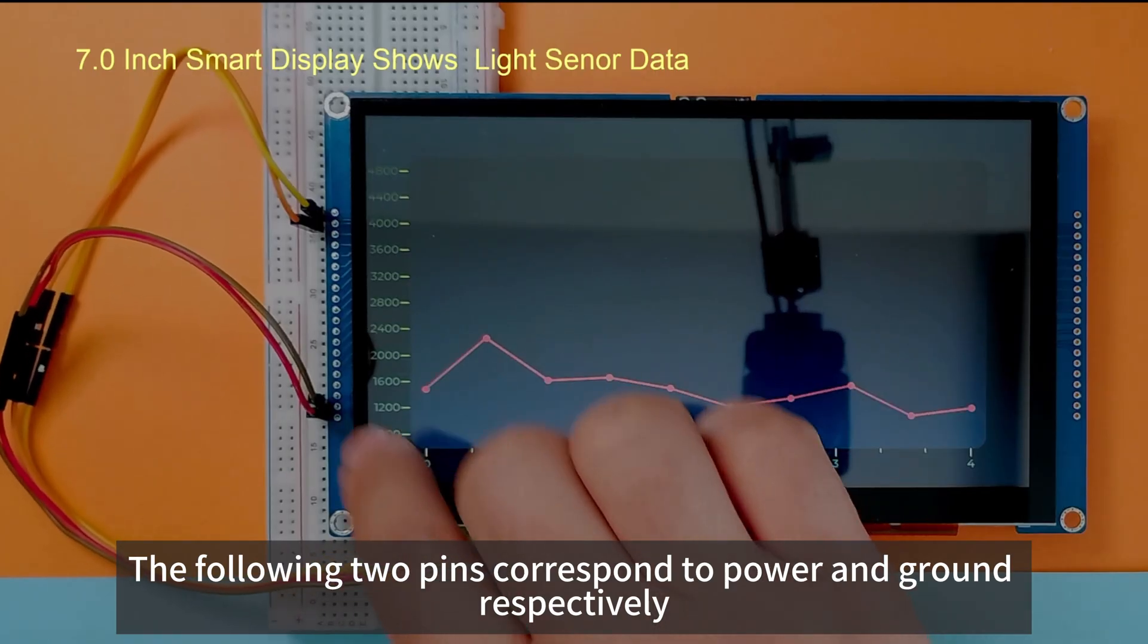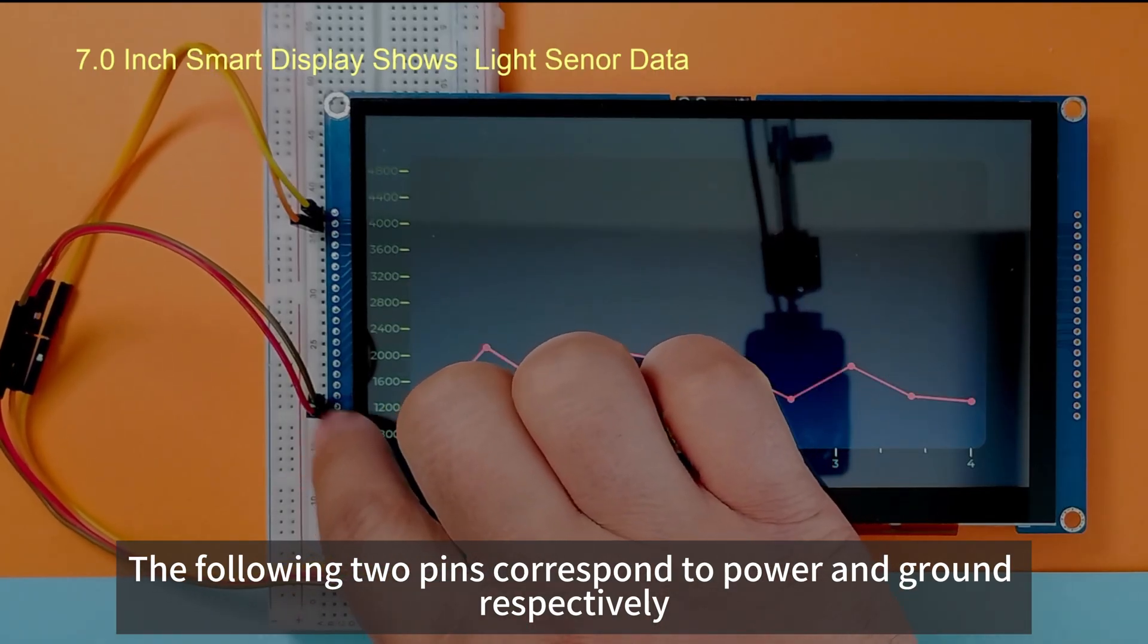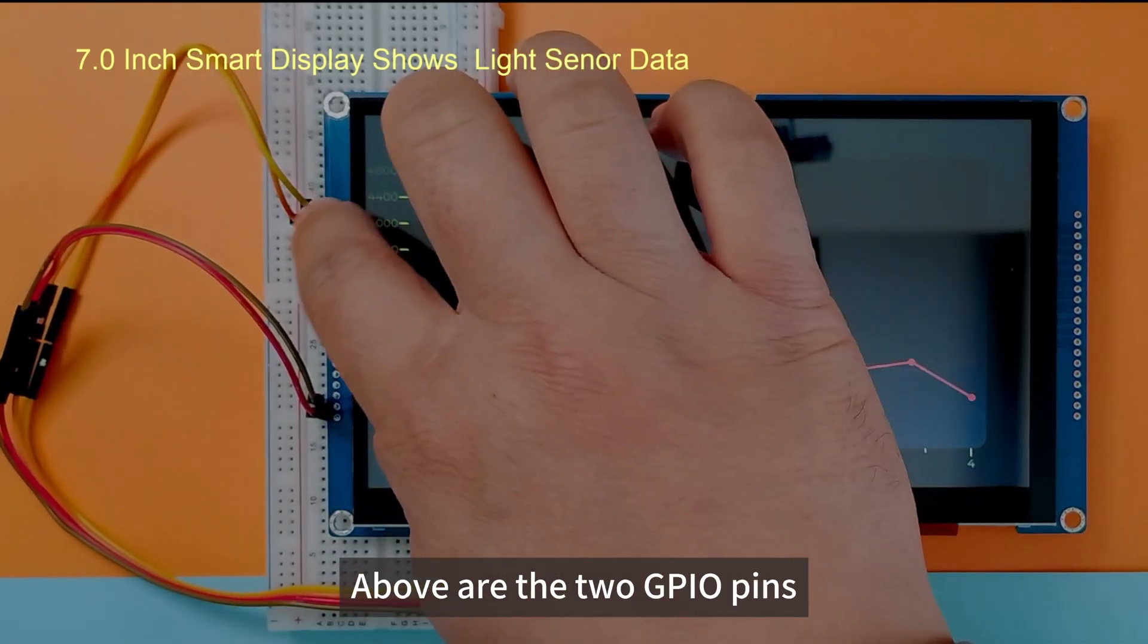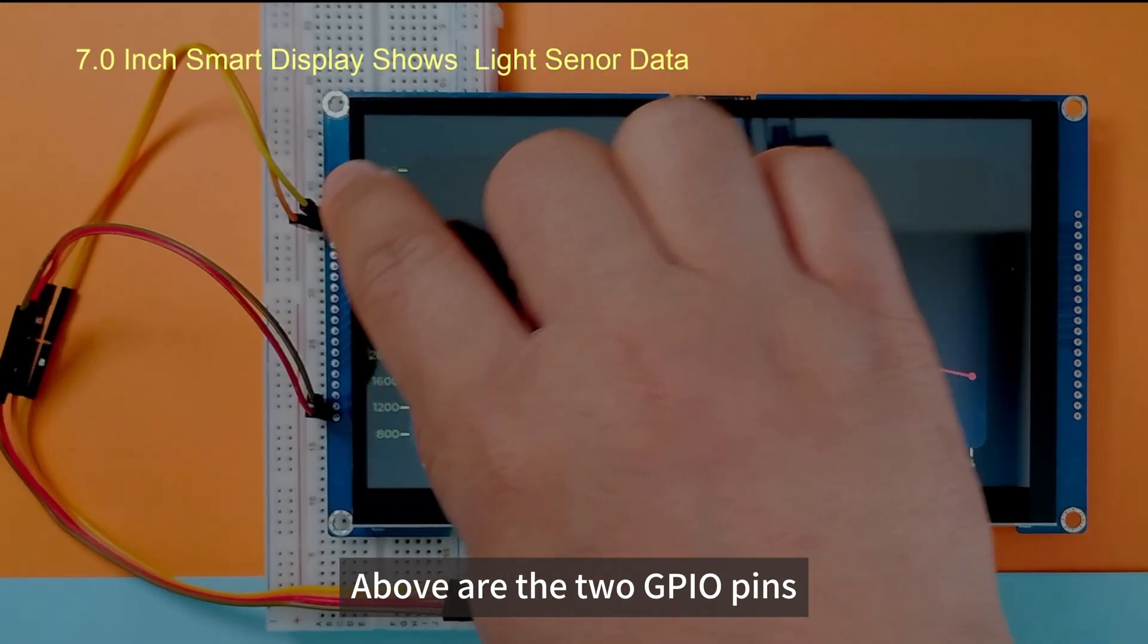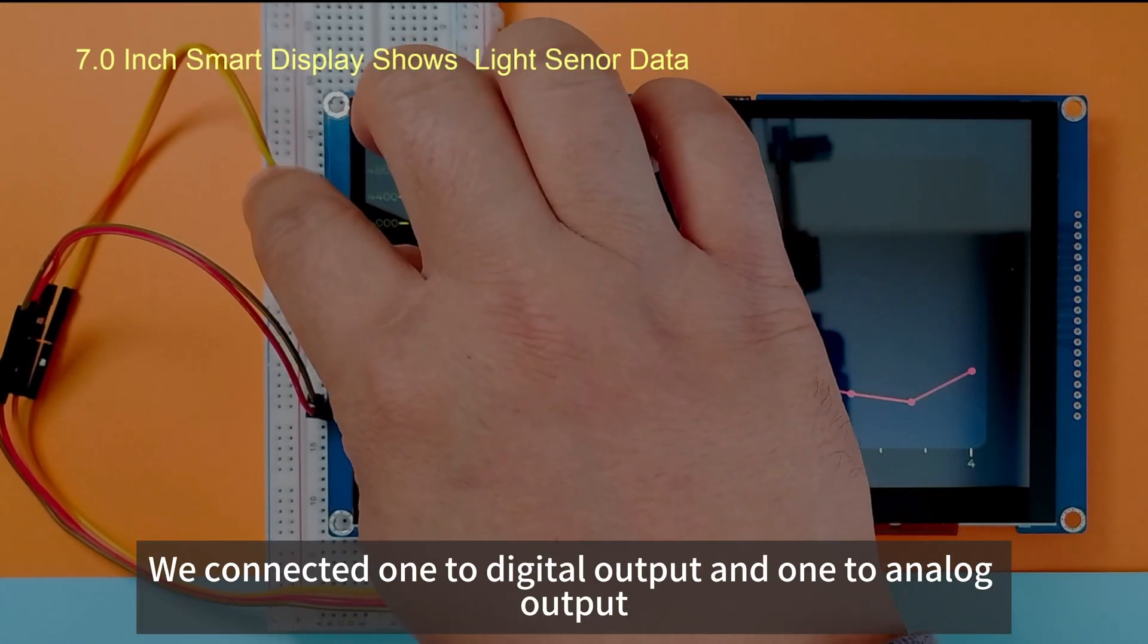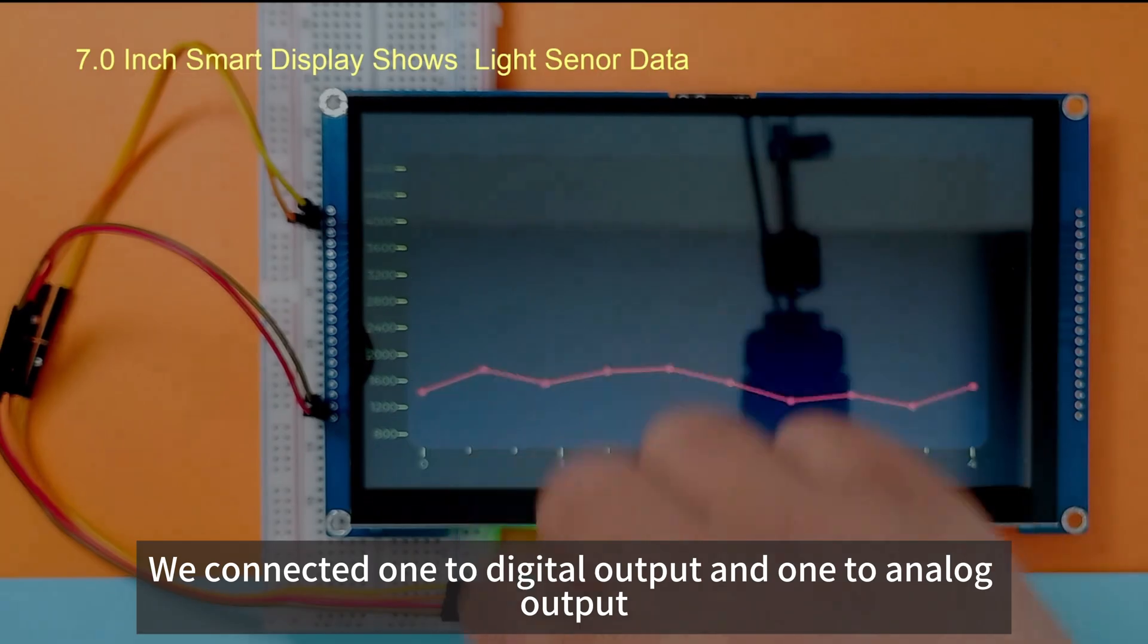The following two pins correspond to power and ground respectively. Above are the two GPIO pins. We connected one to digital output and one to analog output.